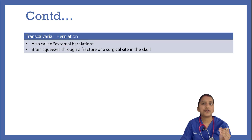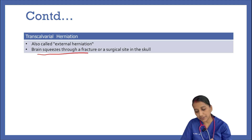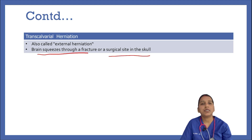Coming to transcalvarial herniation, also known as external herniation. It is a type of herniation which may occur during hemicraniectomy — surgery in which a flap of skull is removed. The brain squeezes through the fracture or the surgical site, and the protruding brain region prevents the piece of skull from being replaced during surgery.